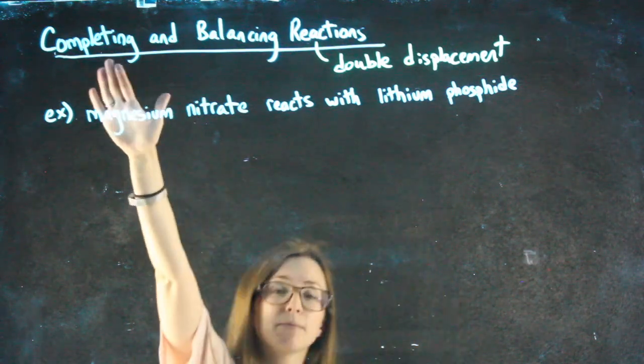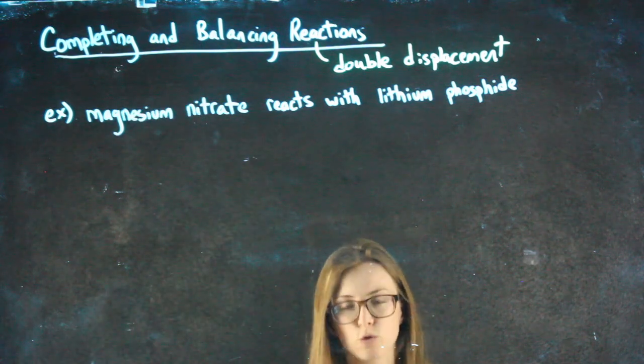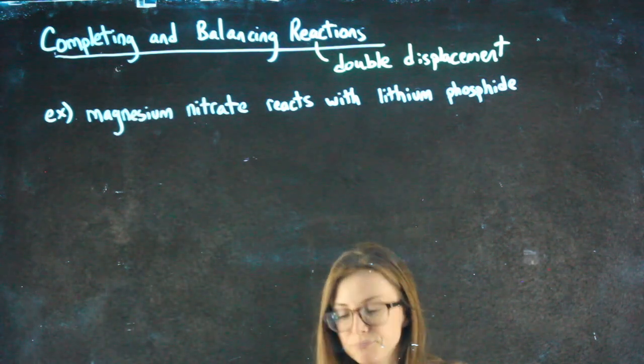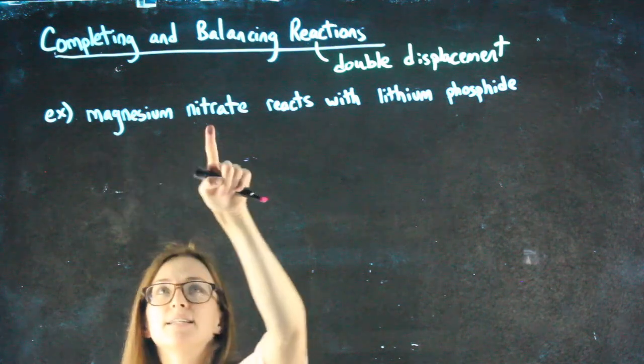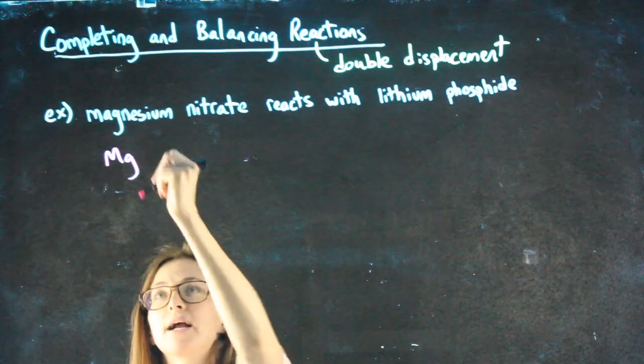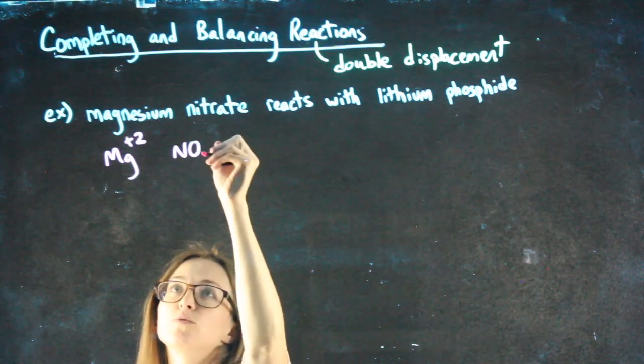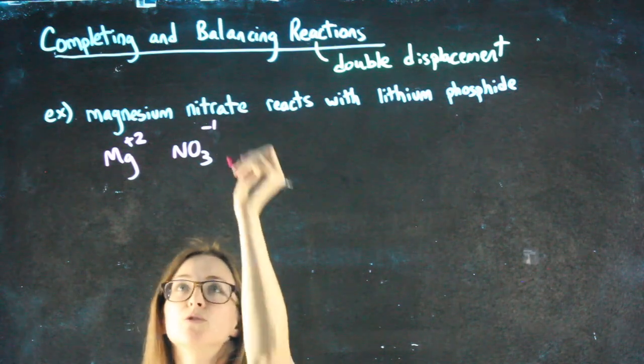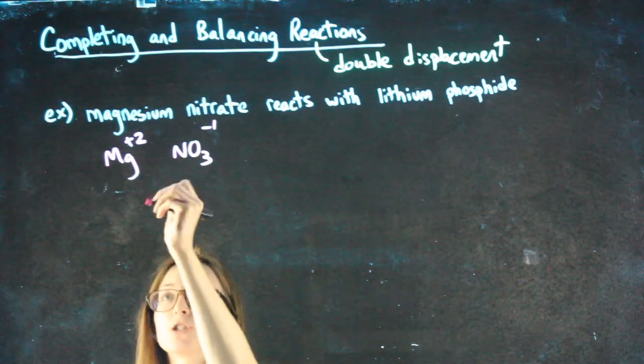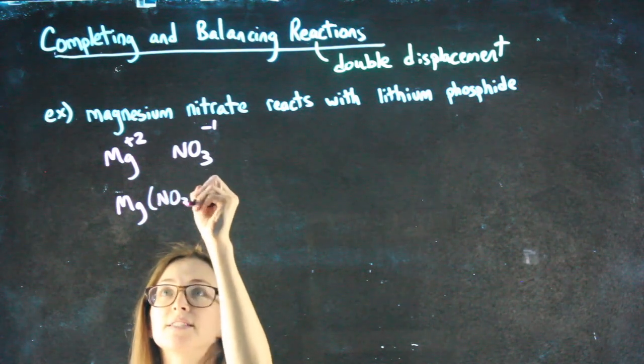Our first step is completing, and in order to do that, we need to look at the two compounds we were given. So magnesium nitrate - I want to go from this name to its formula. I do that by saying magnesium is a plus two, nitrate is a polyatomic that's a minus one, and then I crisscross, making sure I use parentheses for my nitrate.